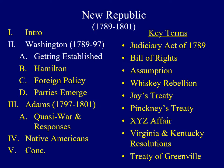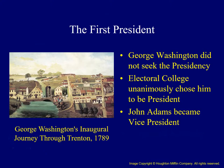A true spirit of cooperation was seen in the years following the ratification of the Constitution, as several institutions were established under the new government. One of the first orders of business was the election of a president. George Washington did not seek the office. However, in February of 1789, the Electoral College met and unanimously chose Washington to be the nation's first president. His vice president was John Adams.